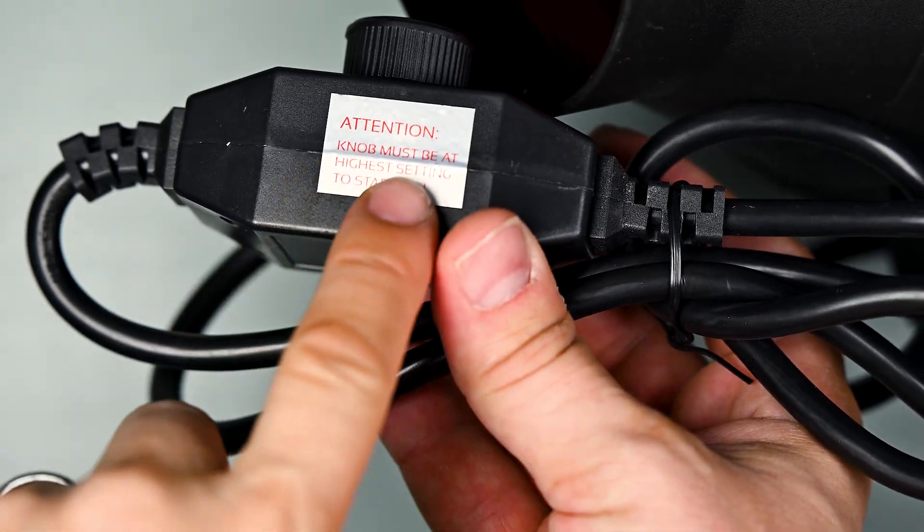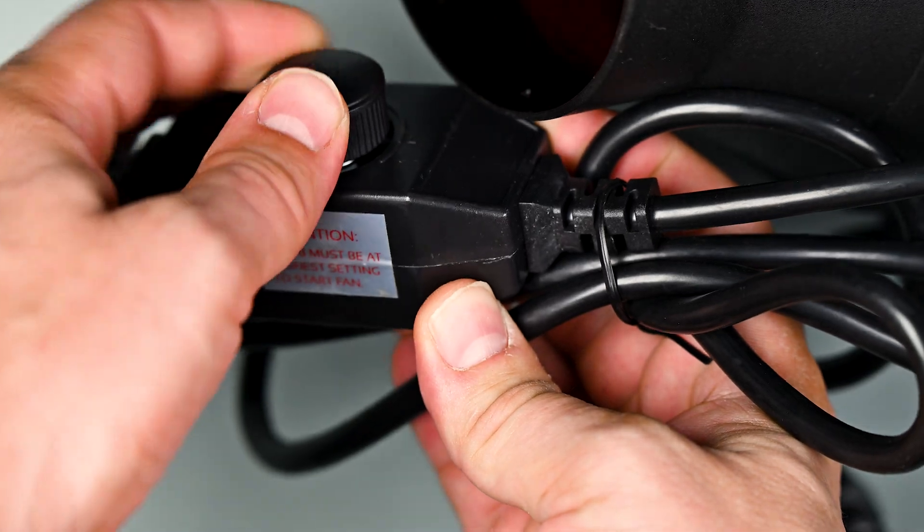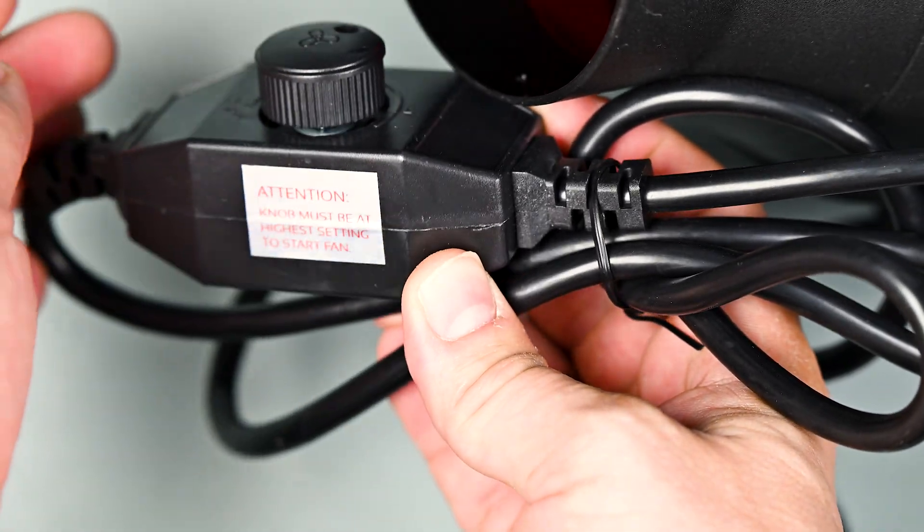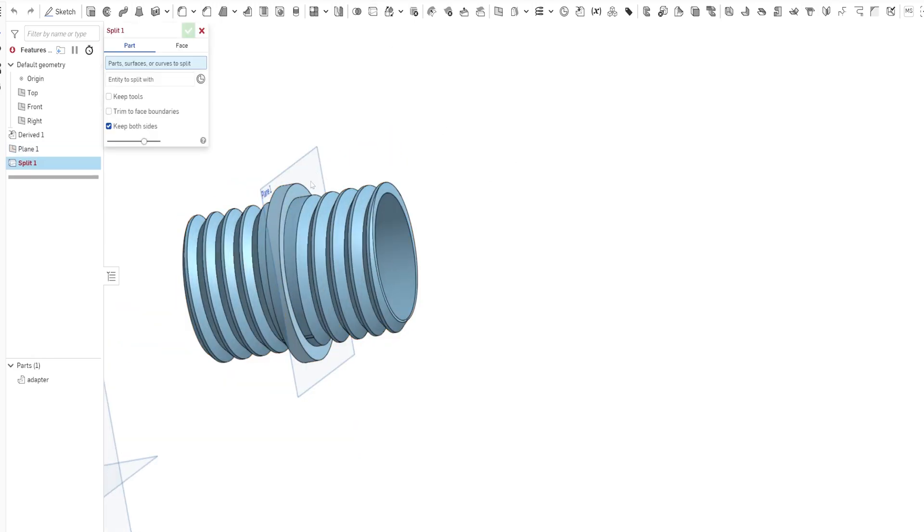And at first I thought it only worked on the highest setting, which I didn't love. But turns out it does start on low speed too, so we're good. Next step, make an adapter to connect it to the hose.